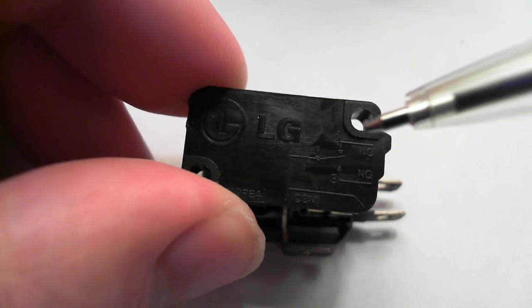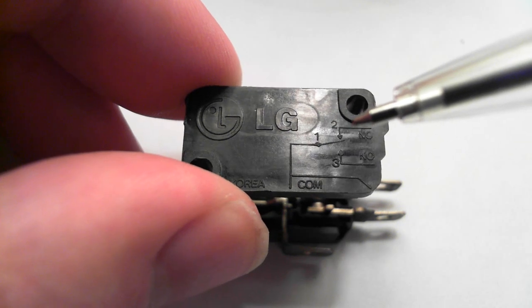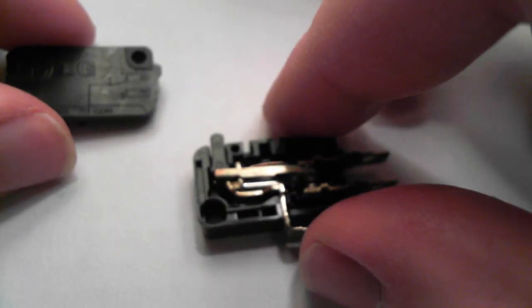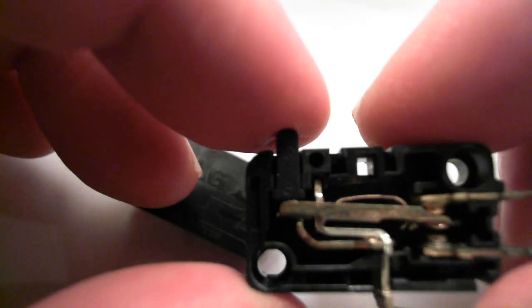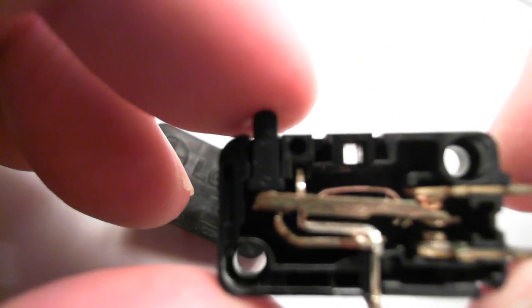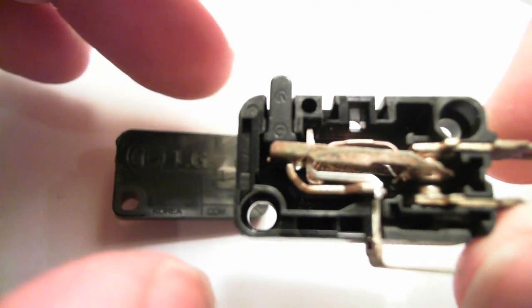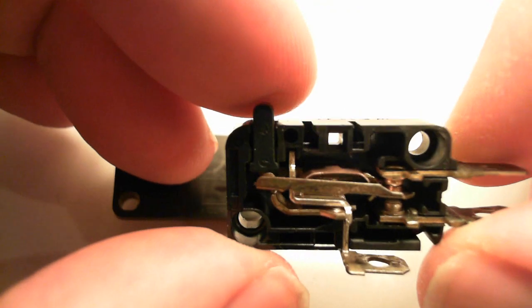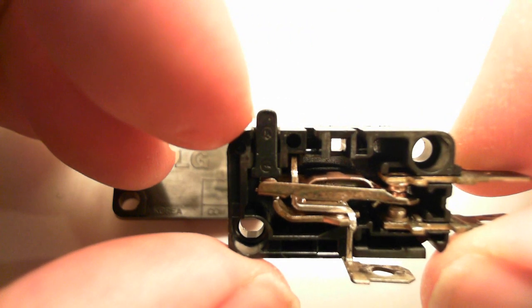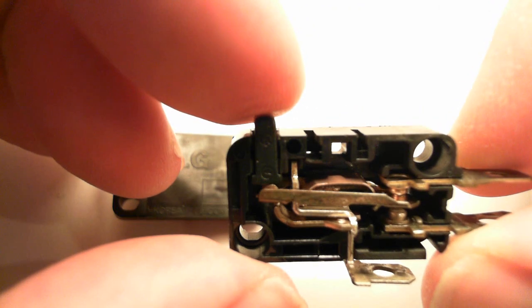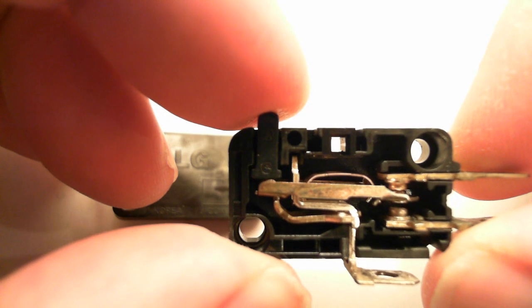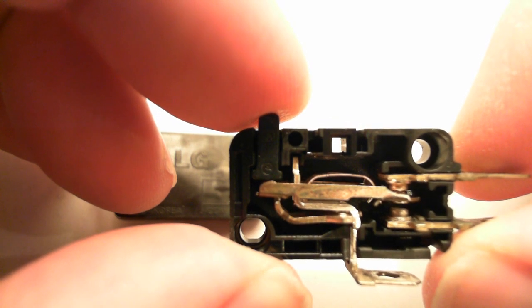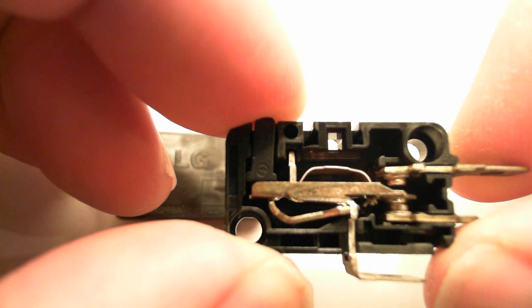So basically, when the microswitch is triggered, like this, you can see here the contacts and the trigger mechanism, the actuator. This thing here is called the actuator because it actuates the switch. When you push that in, it pushes this lever which is spring loaded, and it clicks onto the bottom.